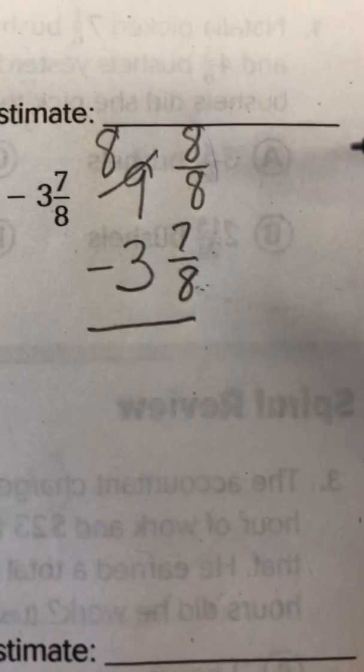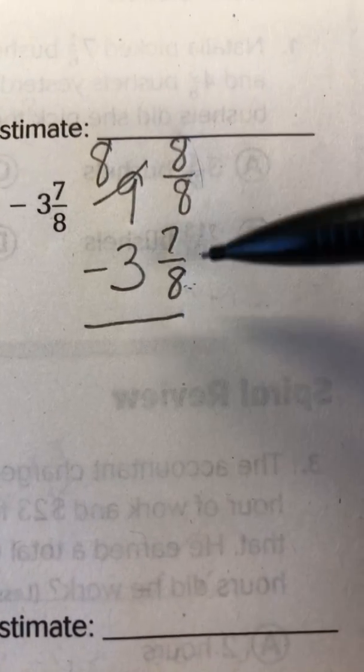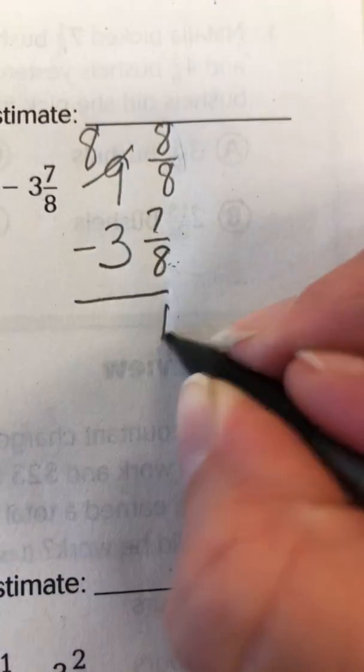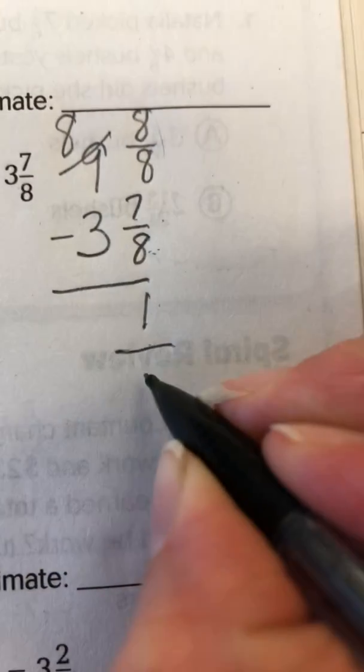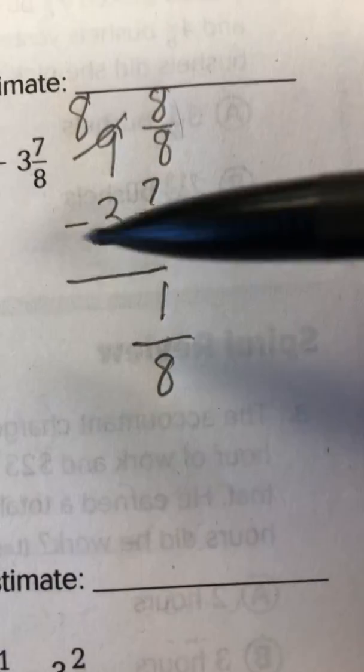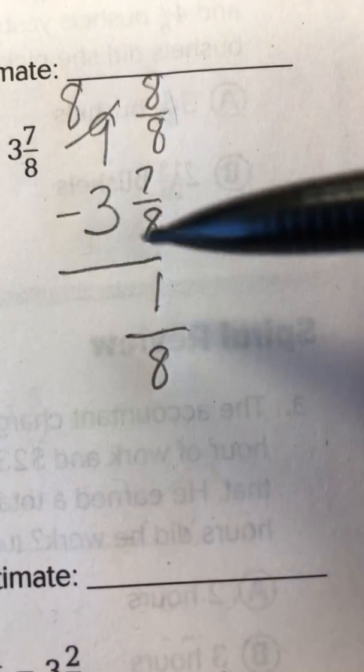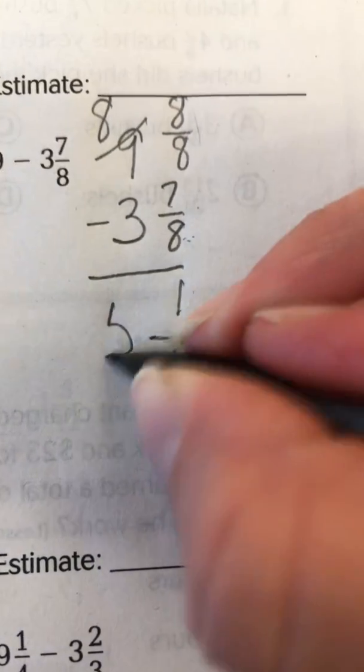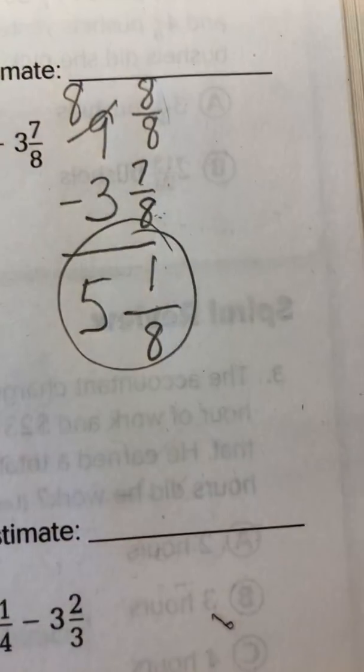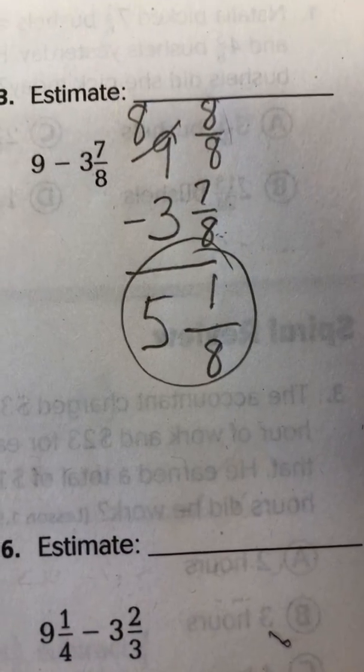So again, only subtract your numerators. So 8 minus 7 is 1. Denominator is still an 8. And now we subtract our whole numbers. 8 minus 3 is 5. So in this case, our answer is 5 and 1/8.